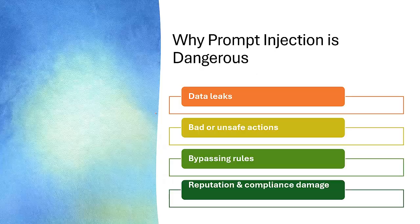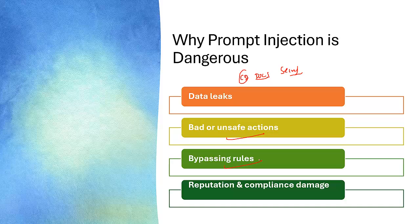So why is prompt injection dangerous? First, data leak — AI can reveal confidential data like customer information, internal docs, and secrets. Second, bad or unsafe output — the AI might generate misleading advice, harmful content, and wrong instructions. Third, bypassing rules — if not carefully designed, the rules can be overridden to get sensitive information. Fourth, reputational and legal damage — data leaks or harmful output can lead to legal, trust, and brand problems.